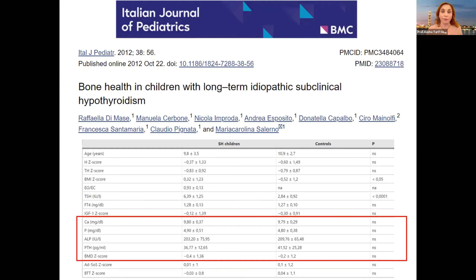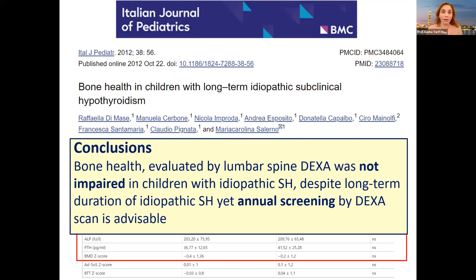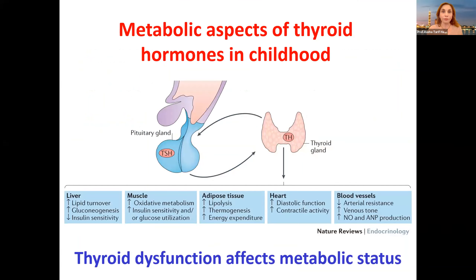Based on that, they stated that bone health evaluated by lumbar spine DEXA was not impaired in children with idiopathic subclinical hypothyroidism, but they advised annual screening by DEXA scan in those with persistent subclinical hypothyroidism. We all know that there are many metabolic aspects of thyroid hormones in childhood, and thyroid dysfunction clearly affects metabolic status.